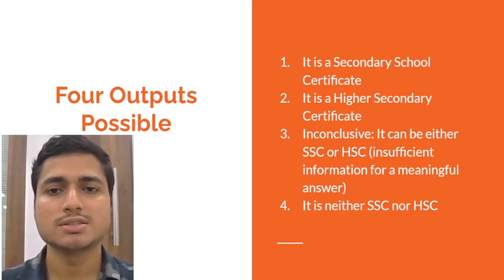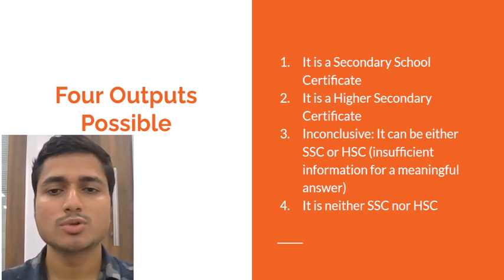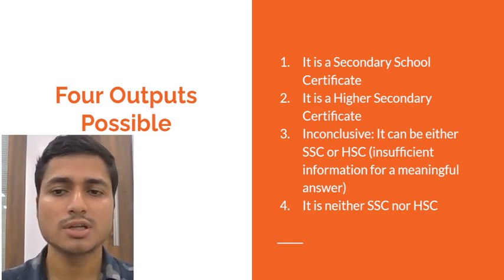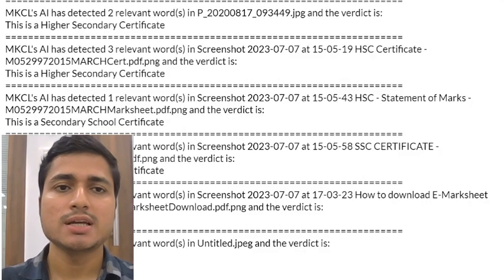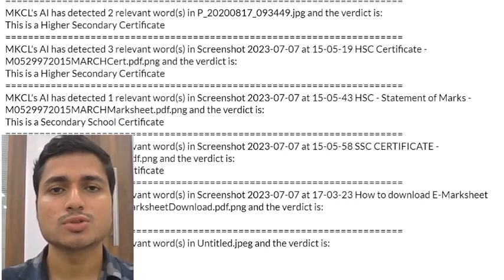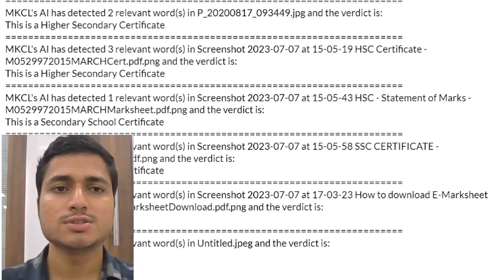A document can be either a SAC certificate, a HAC certificate, or the program could not conclusively find the type of certificate, and finally it could be neither SAC nor HAC. MKCL's AI looks for relevant words in the document, scanning both English and Marathi words, then marks those words to give a prediction for each and every document in a dataset.